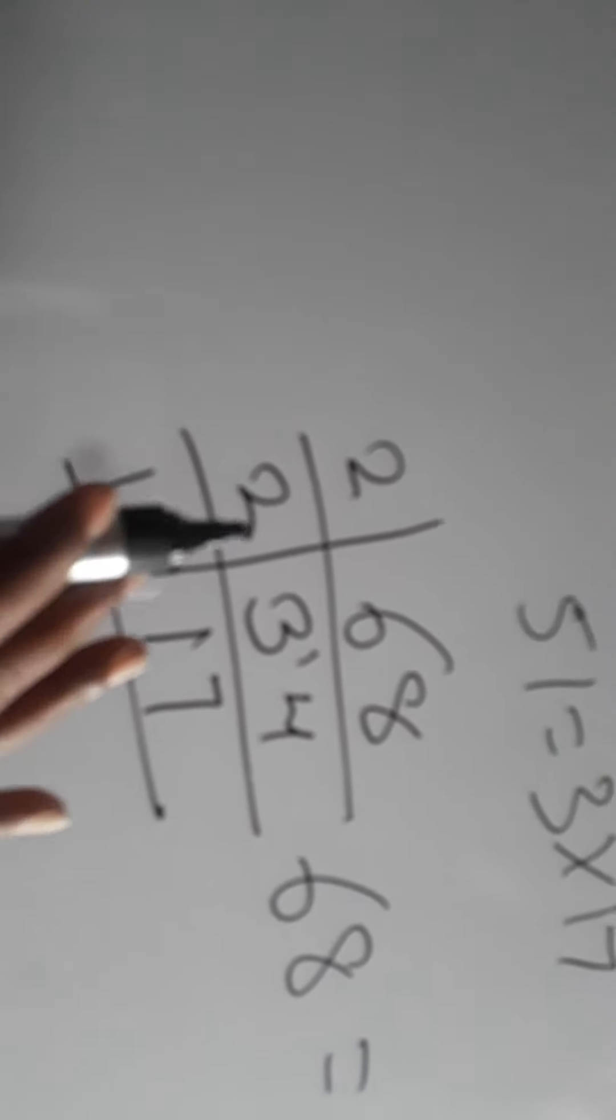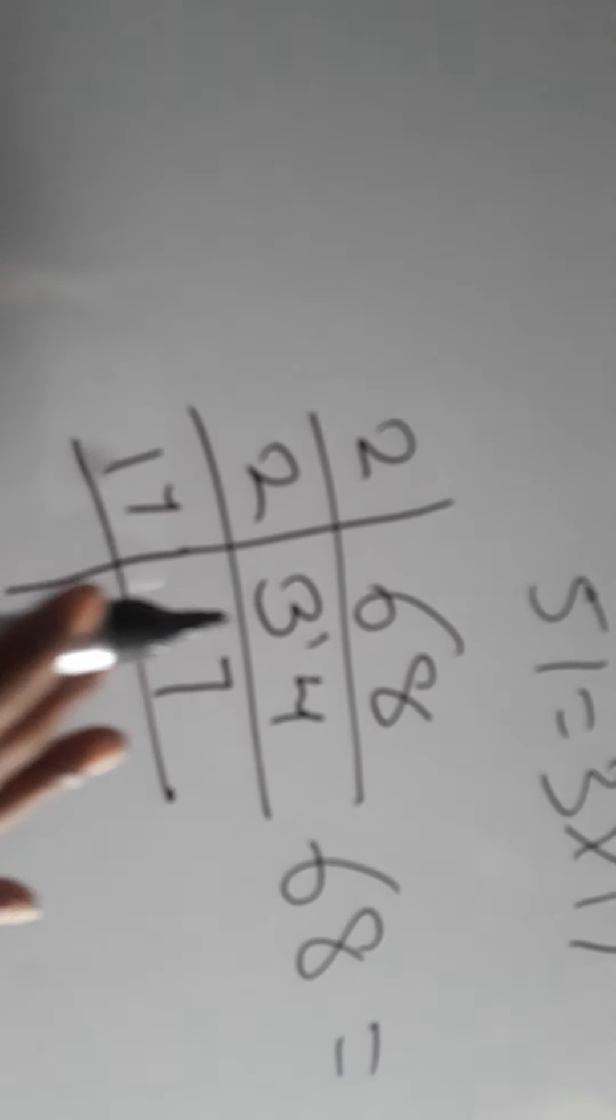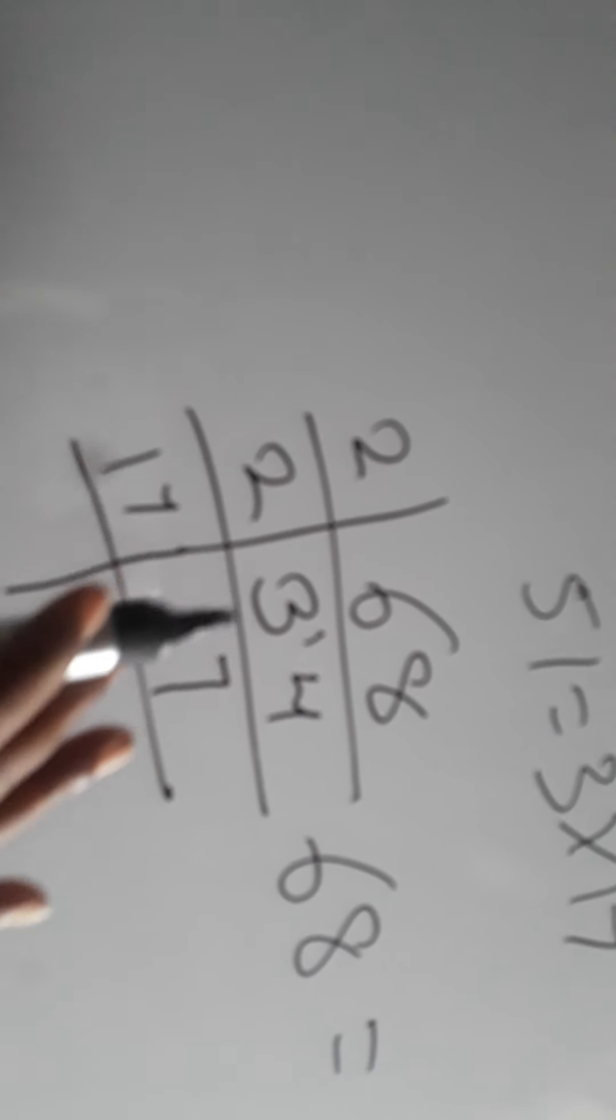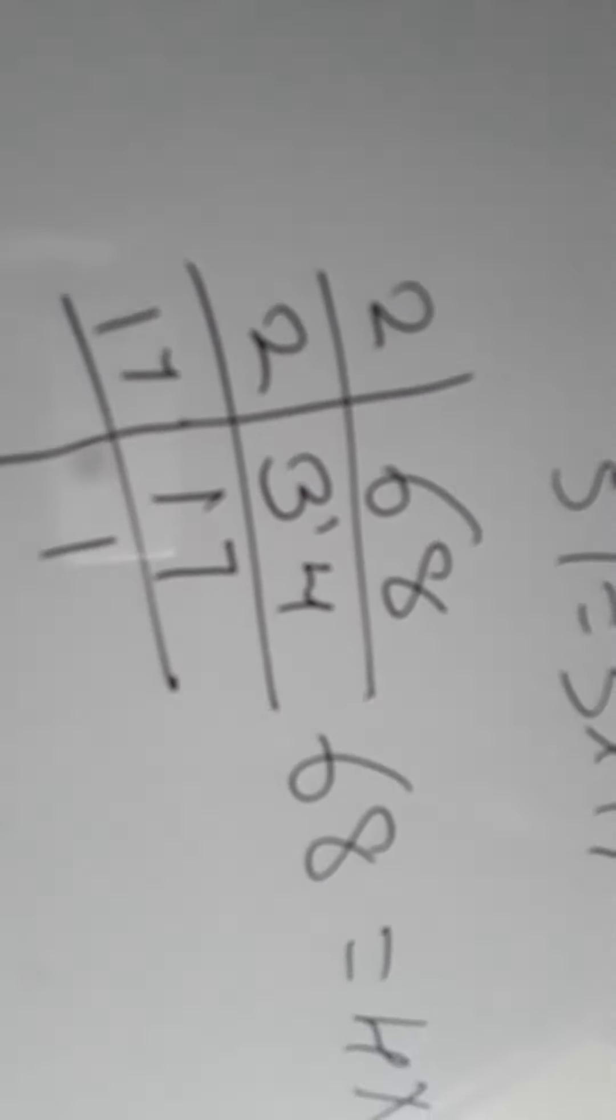So 68 can be split into—now 2 2s are 4. We are not interested in prime factors here. We are only interested in the multiples, how we can divide them, how we can make them easy to solve. So 2 2s are 4, so 4 into 17 I take it. Even if you write 2 into 2 into 17, not a problem. It is not wrong, it is always right.